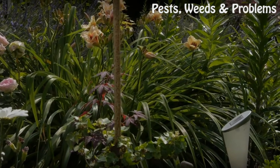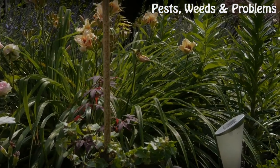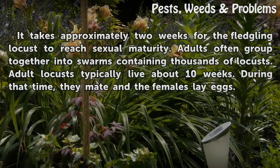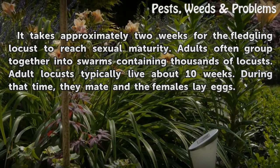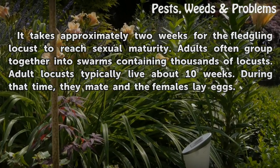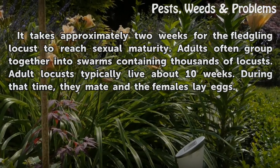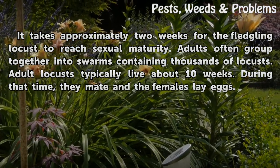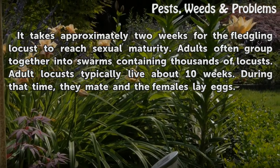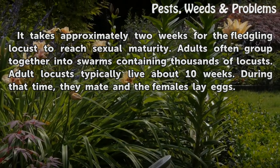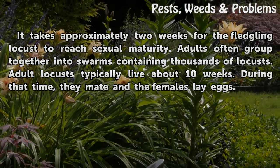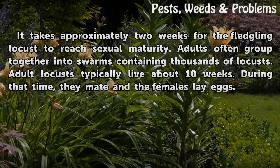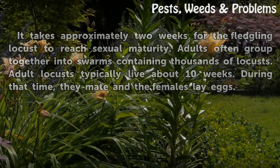Adults. It takes approximately two weeks for the fledgling locust to reach sexual maturity. Adults often group together into swarms containing thousands of locusts. Adult locusts typically live about ten weeks. During that time, they mate and the females lay eggs.